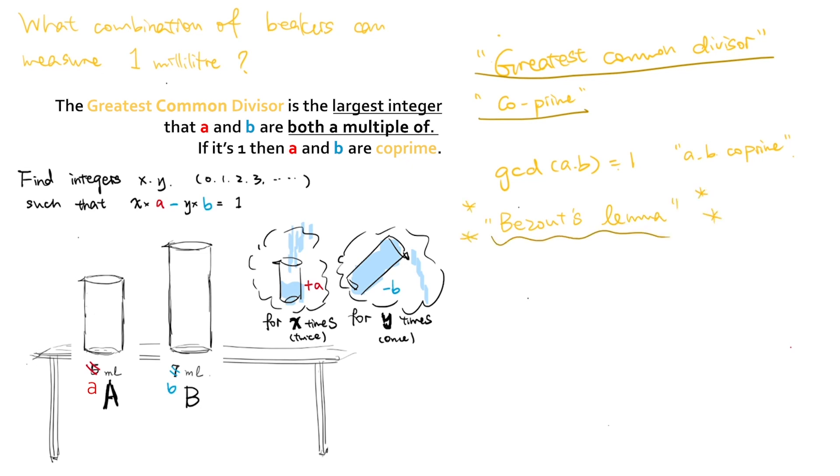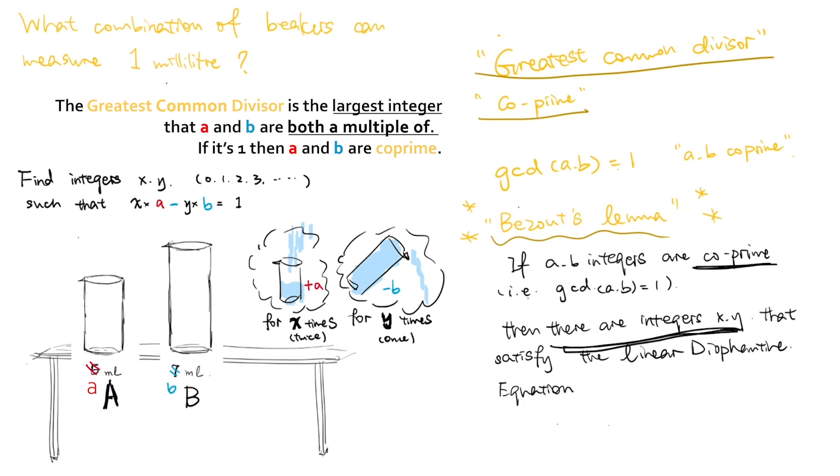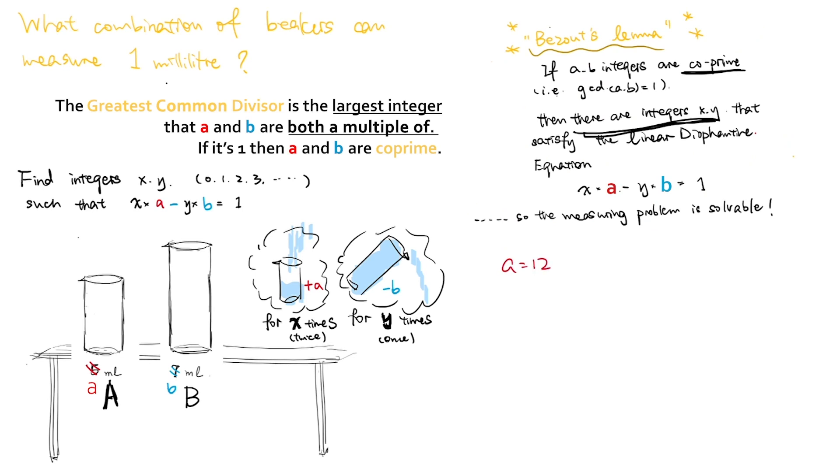Bézout's lemma then suggests that if two given integers A and B are co-prime, that is, their greatest common divisor is equal to 1, then there exists integers x and y that satisfy the linear Diophantine equation x times A minus y times B is equal to 1. So the measuring problem is solvable. In other words, the measuring problem has a solution only if the greatest common divisor of A and B is equal to 1. With two beakers of size 12 and 9, because the greatest common divisor of 12 and 9 is 3, one can only measure volume of water that is a multiple of 3. With two beakers of size 12 and 7, because the greatest common divisor of 12 and 7 is 1, by Bézout's lemma it's possible to measure 1 ml of water. In specific, by noting 3 times 12 minus 5 times 7 is equal to 1, we need to fill in the 12 ml beaker thrice, empty the 7 ml beaker 5 times to obtain 1 ml.